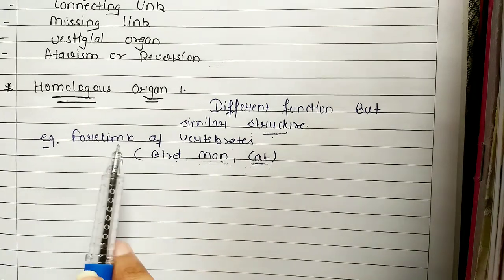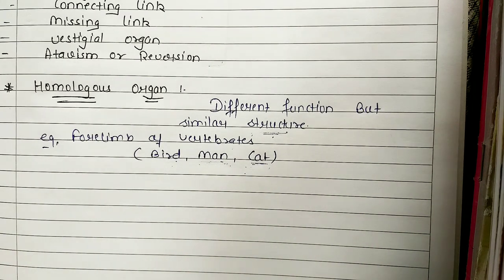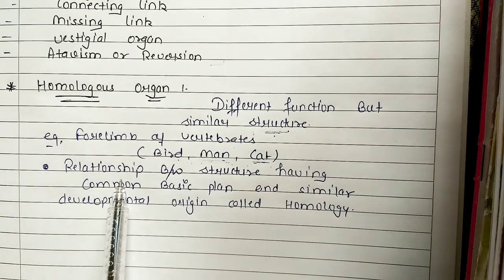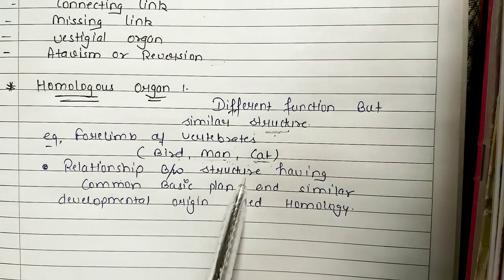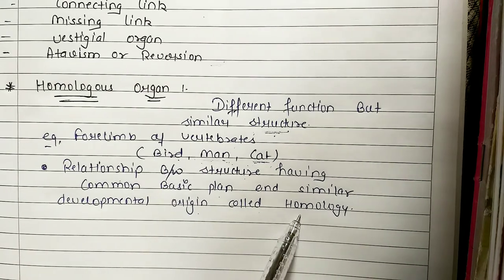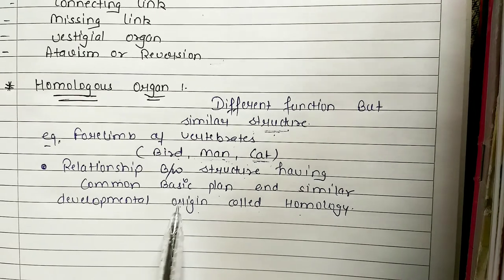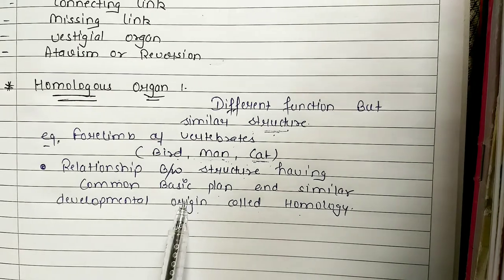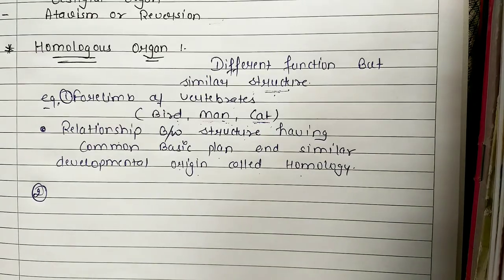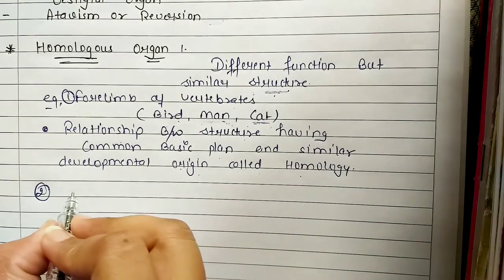Whatever vertebrates — what do we call the 4 limbs? Homologous organs. Because the structure is similar, meaning it's a relationship between structure, having a common basic plan and similar development. This is called homology. Homologous organs are called similar origin and basic plan. That is homology. We have also taught the 4 limbs of vertebrates as one example.